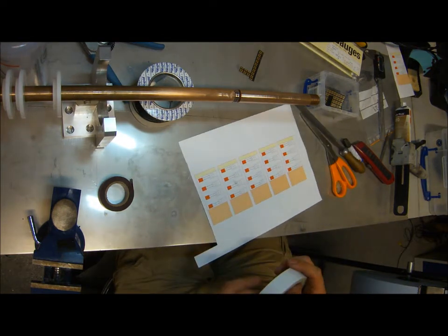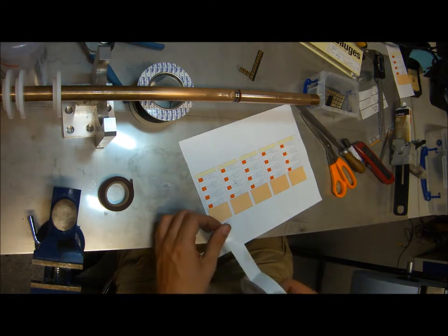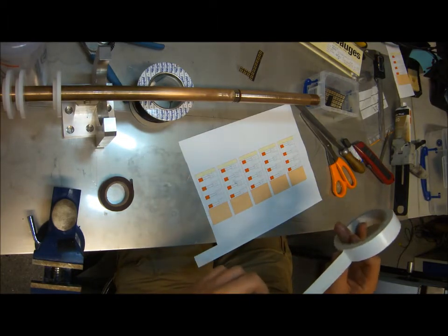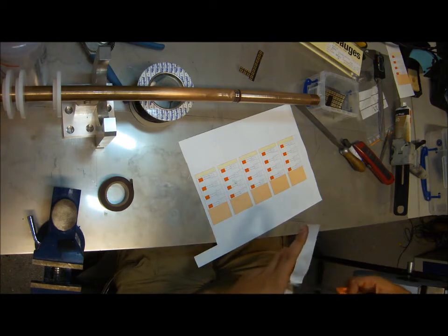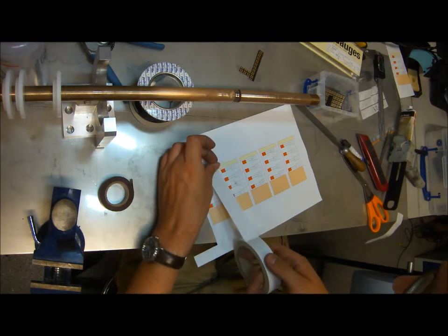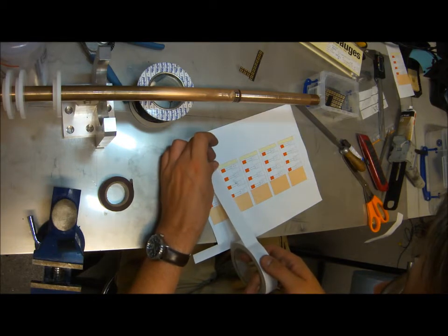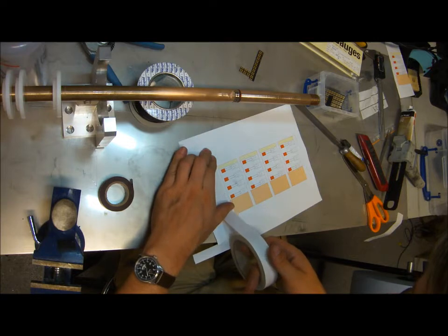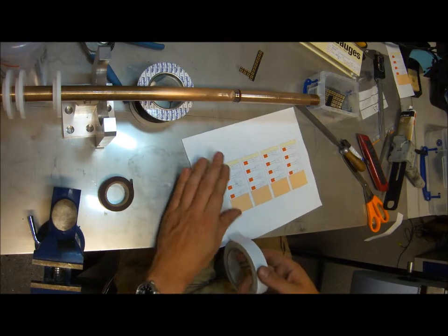The first thing to do is to use double-sided tape, clean the part, and cover this part of the printout with it.